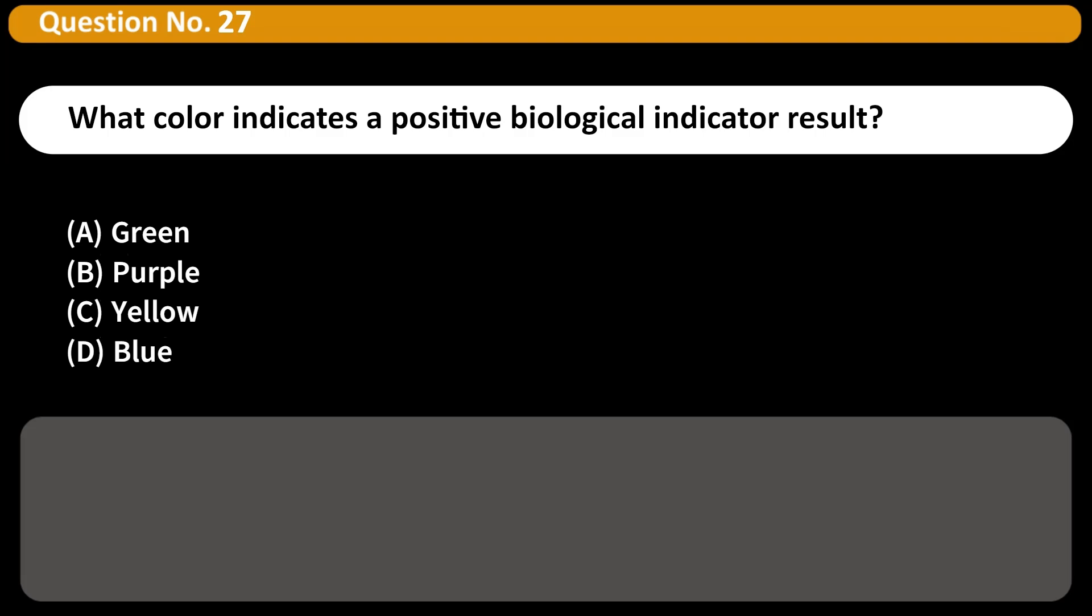What color indicates a positive biological indicator result? A. Green, B. Purple, C. Yellow, D. Blue. Answer C. A yellow result typically indicates microbial growth, meaning sterilization failed.